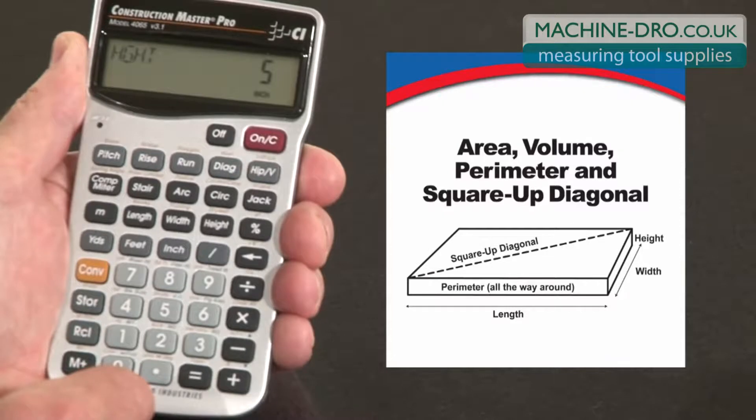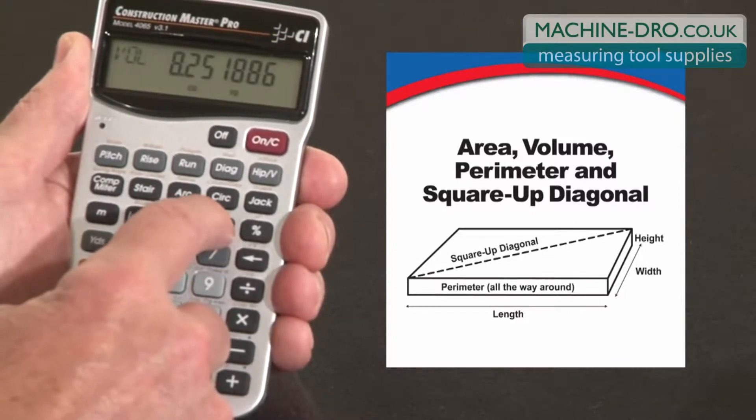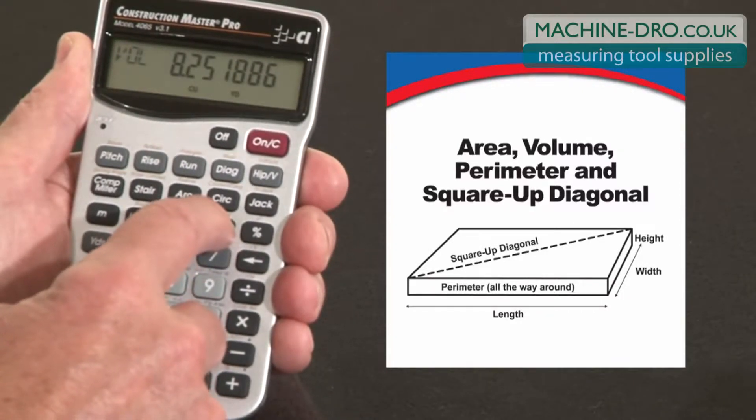So now it's all set to give us a whole series of answers. You can go back to the height key and it gives us our volume, 8.25 cubic yards.